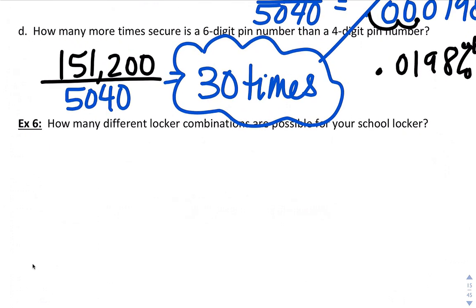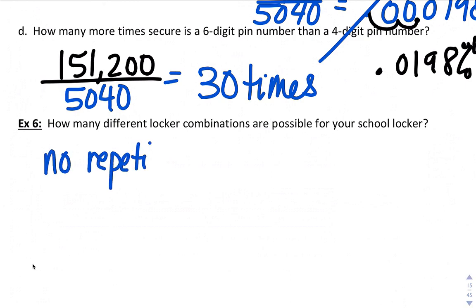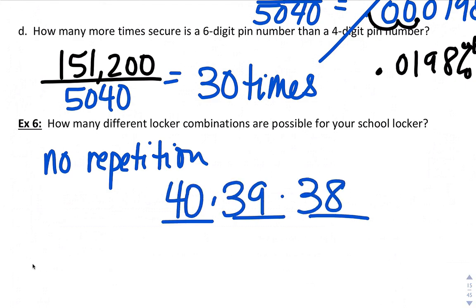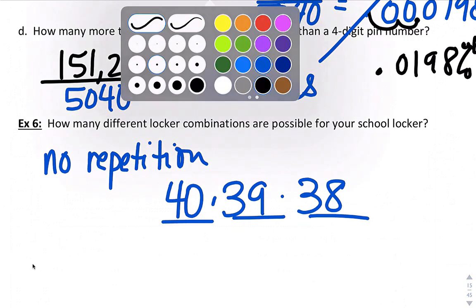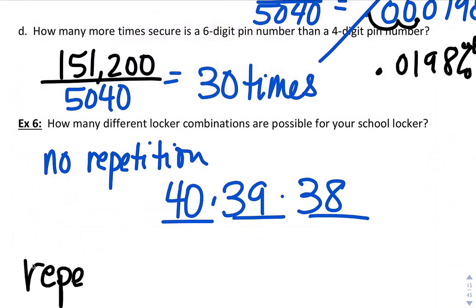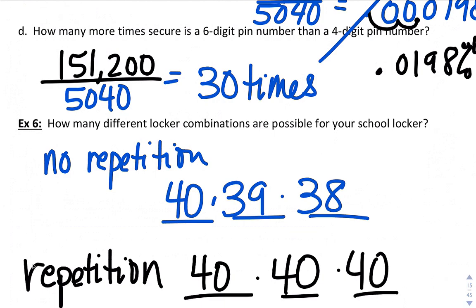How many different locker combinations are possible? Again, I'm assuming that lockers, you can't use the same number twice. So if no repetition, and usually combination locks have 40 different numbers, and if you can't repeat, here's what it would look like: 40 times 39 times 38. If there is repetition allowed, and I don't know if there is with combination locks, it would be 40 to the third power. Just 40 to the third, you can type that in.